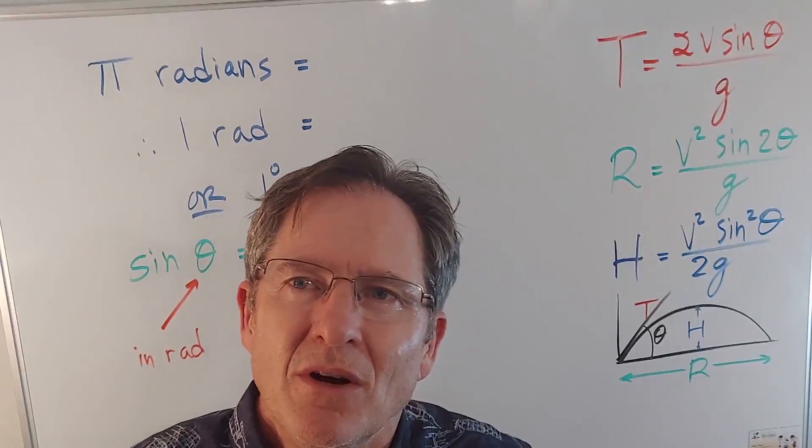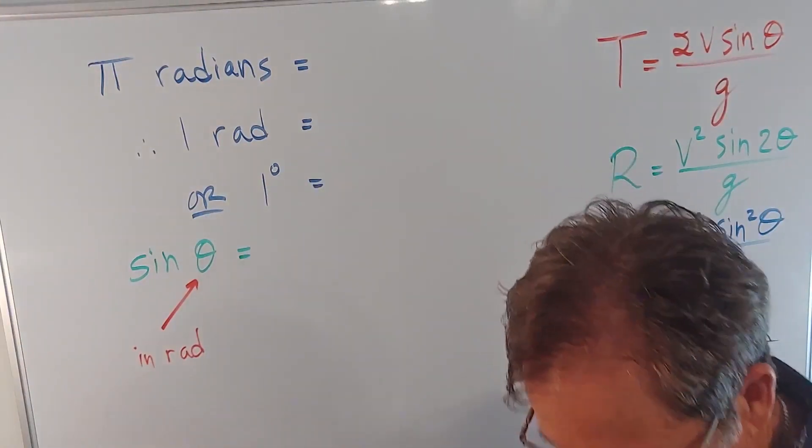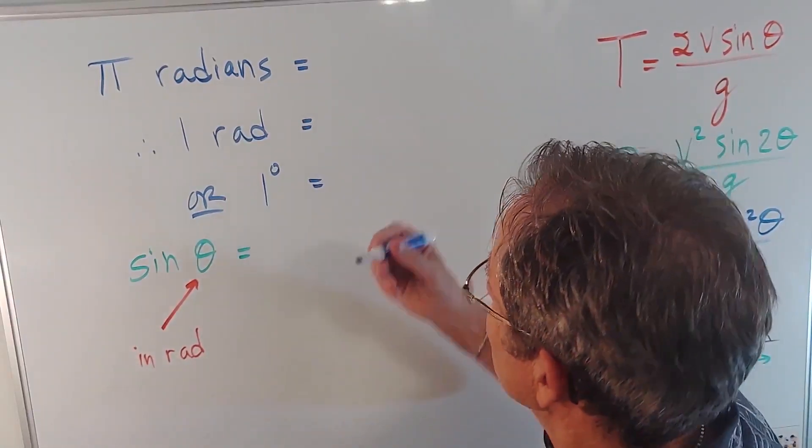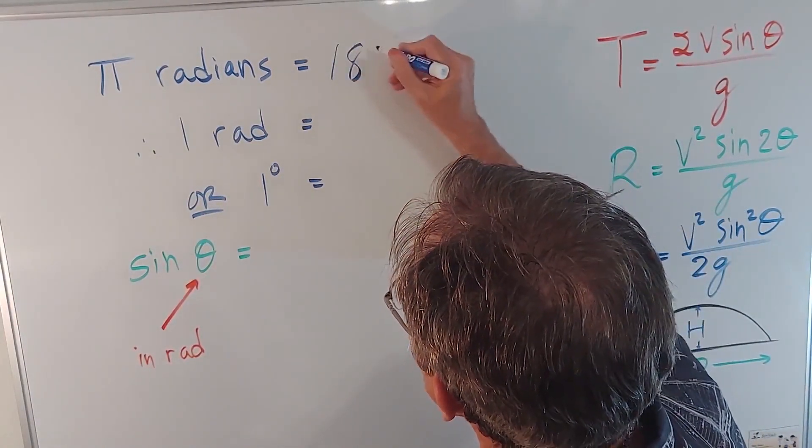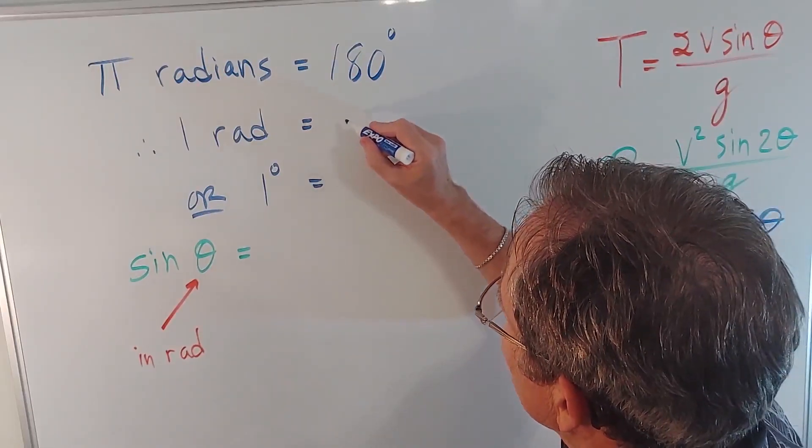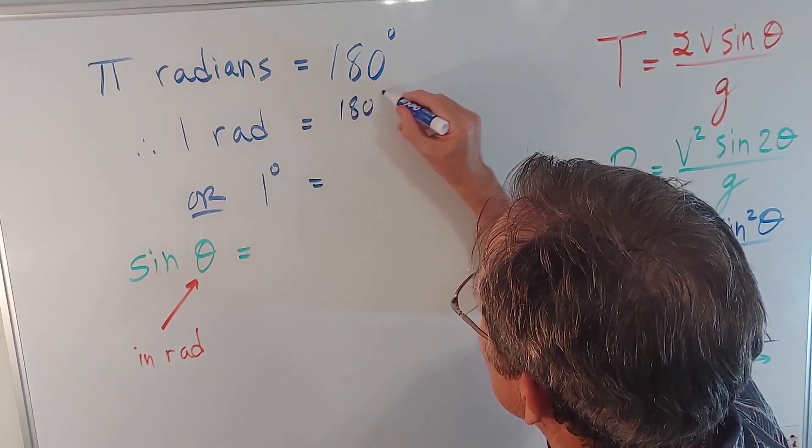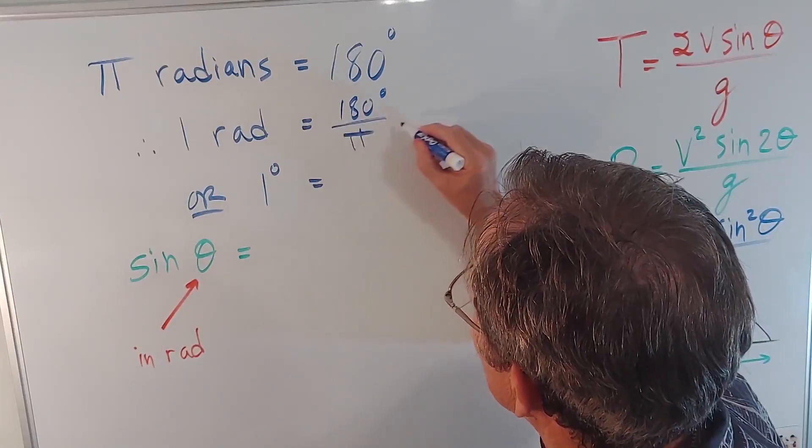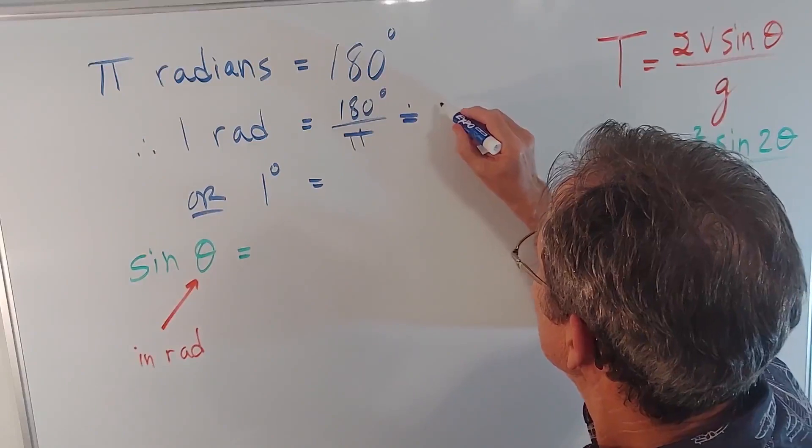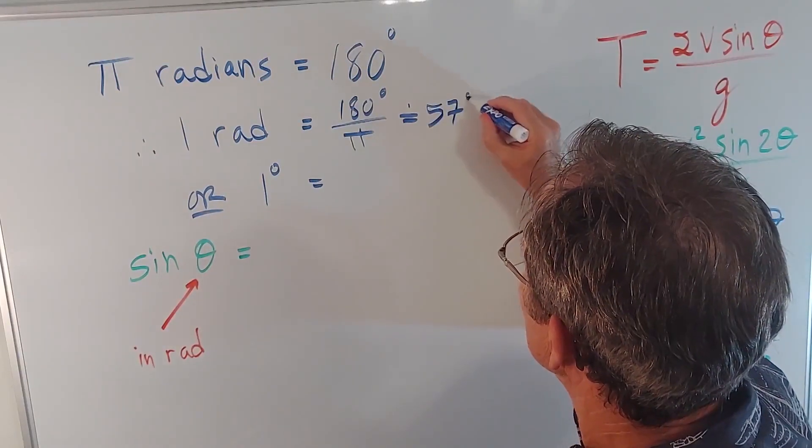First I want to talk about radians. In case you don't know, halfway around the circle is π radians, which of course is 180 degrees. So one radian, for example, would be 180 degrees divided by π, which turns out to be approximately, and you can check this on a calculator, 57 degrees.